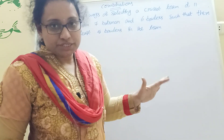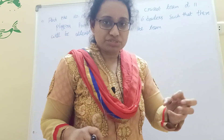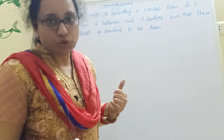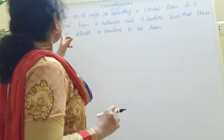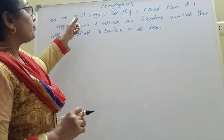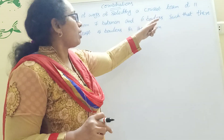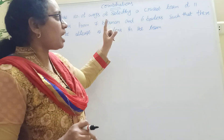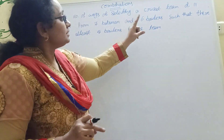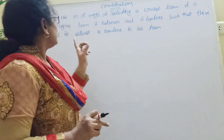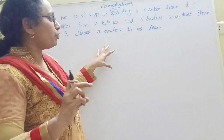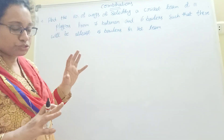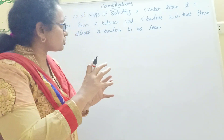In combinations, we look at how to select items. Here is an important formal problem: Find the number of ways of selecting a cricket team of 11 players from 7 batsmen and 6 bowlers, such that there will be at least 5 bowlers in that team — meaning a minimum of 5 bowlers.